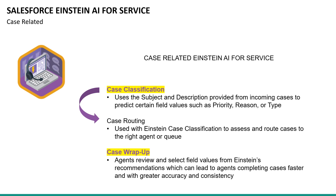First, there are two important Einstein AI for Service features that are related to Salesforce cases. Case classification uses the subject and description provided from incoming cases to predict certain field values, and those field values are then used in case routing so that cases can be routed to the right agent or queue. There's also a new case wrap-up feature where Einstein recommends values to agents so they can complete cases faster and with greater accuracy and consistency.